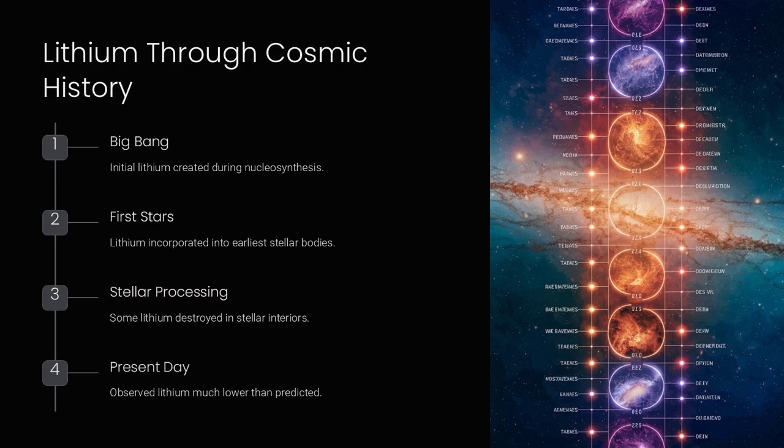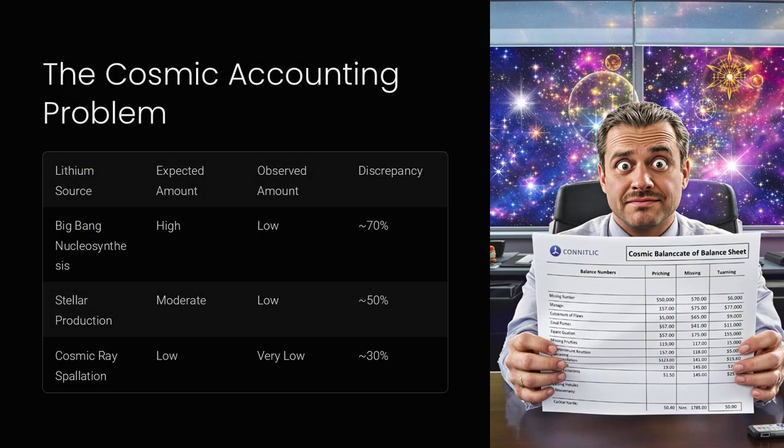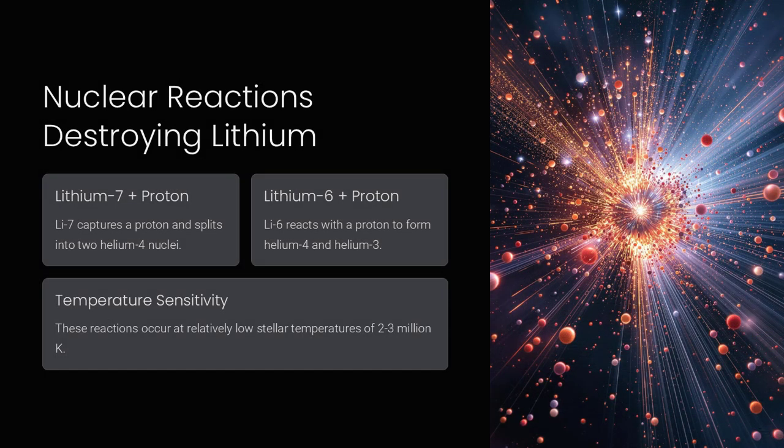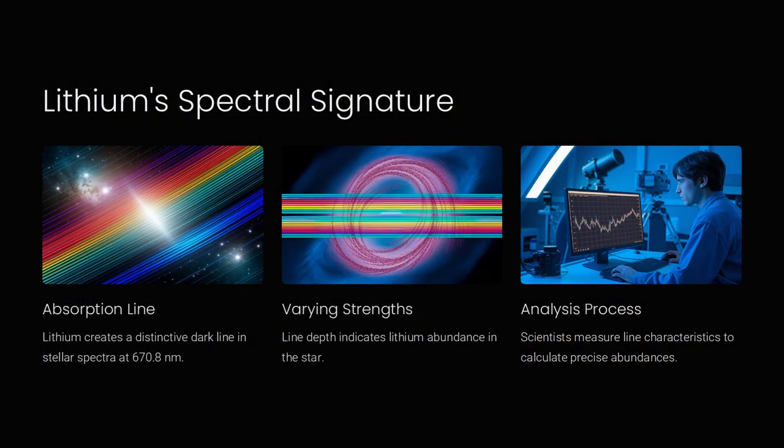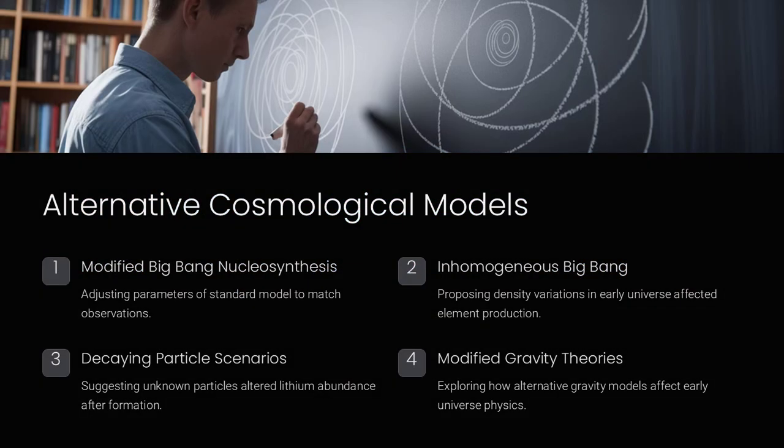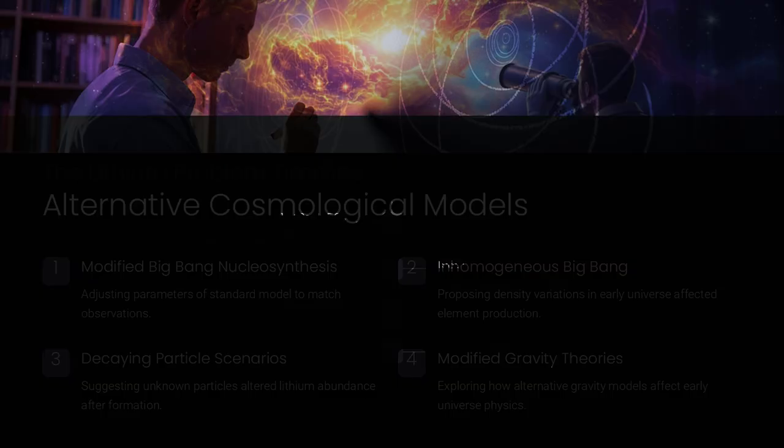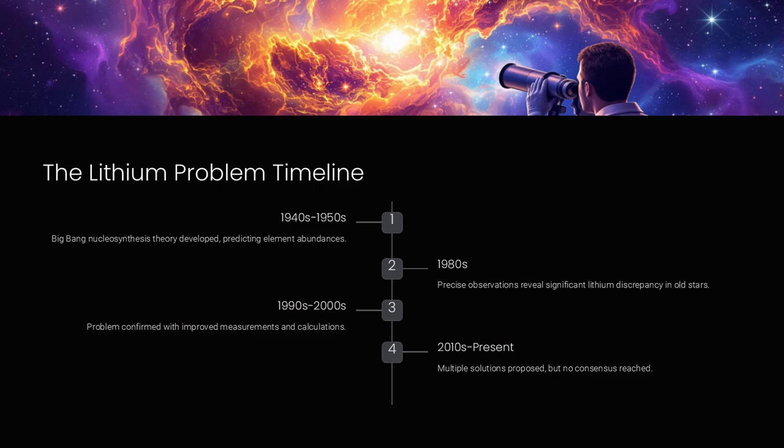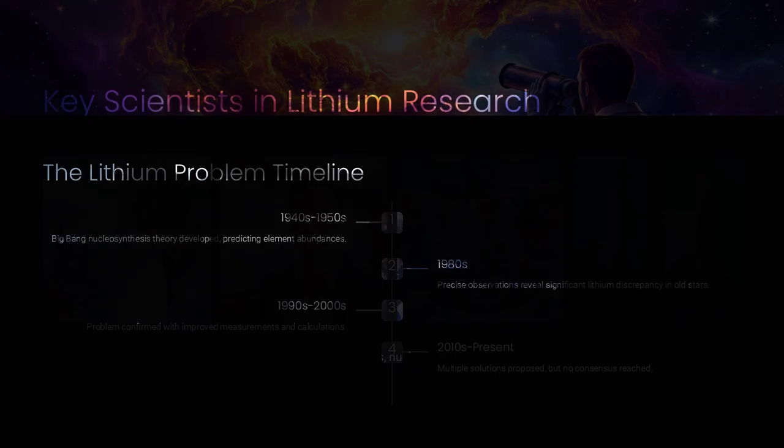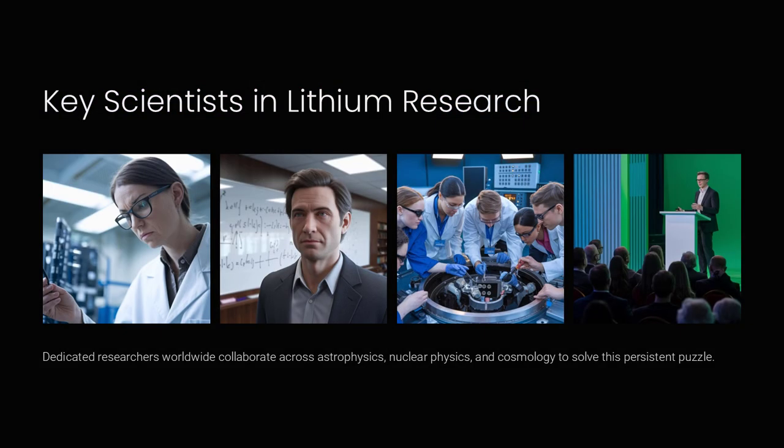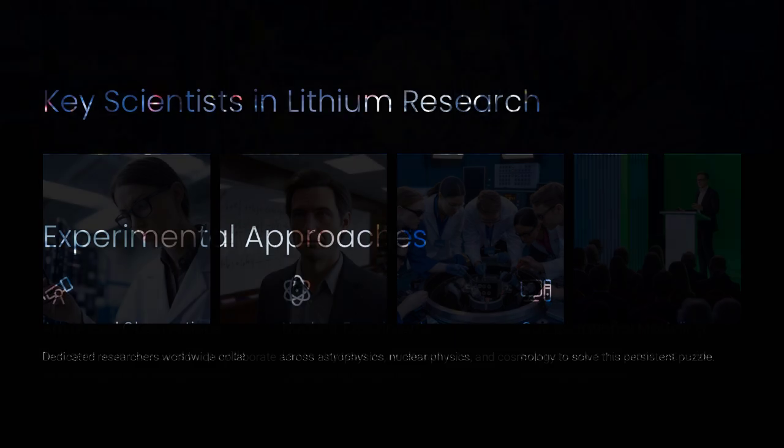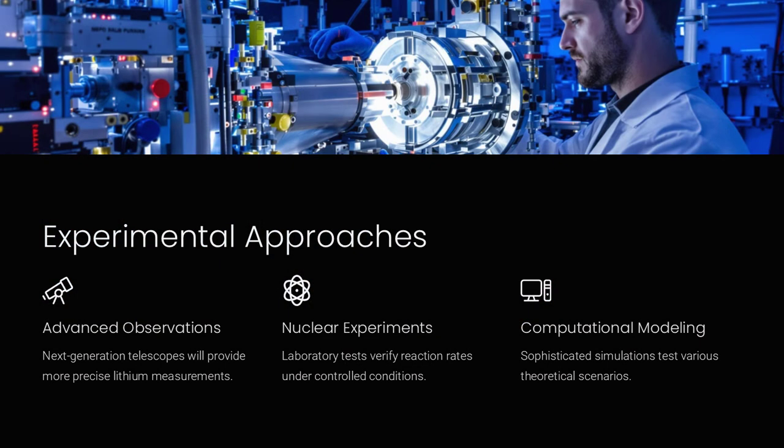Another idea is that lithium might have been destroyed or hidden over time. For example, lithium could be consumed in stars or locked away in forms that are difficult to detect with current instruments. Certain types of stars may burn lithium in their interiors, and mixing processes in stars can bring lithium to regions where it is easily destroyed by nuclear reactions. Additionally, lithium might adhere to dust grains in interstellar space, making it less visible in the gas phase that astronomers typically observe.